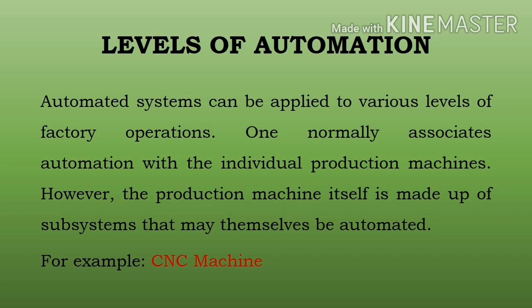Agar koi bhi automated part handling system ko kisi bhi 2 ya 3 machine tool se add karke connect karte hain, toh use computer control se upload karna hota hai aur saath hi saath machine tool computer se bhi instruction — means program — receive karta hai. Is tarah yahan par teen tarah ka automation level aur uska control hota hai: pehla positioning system level, second machine tool level, aur third manufacturing system level.